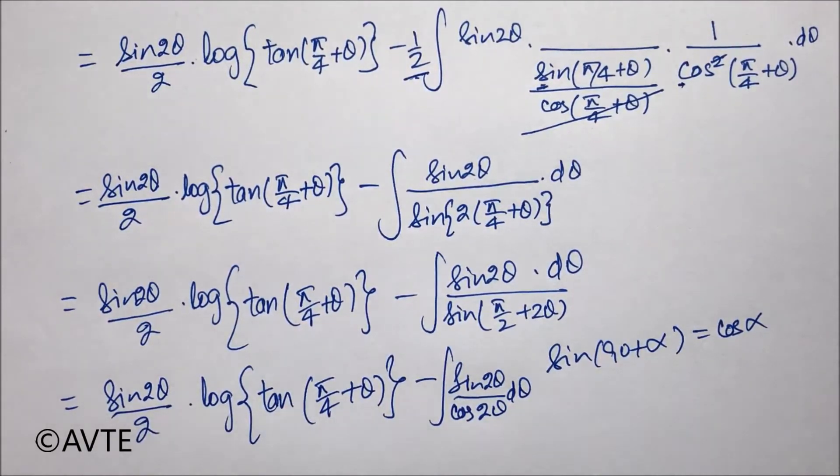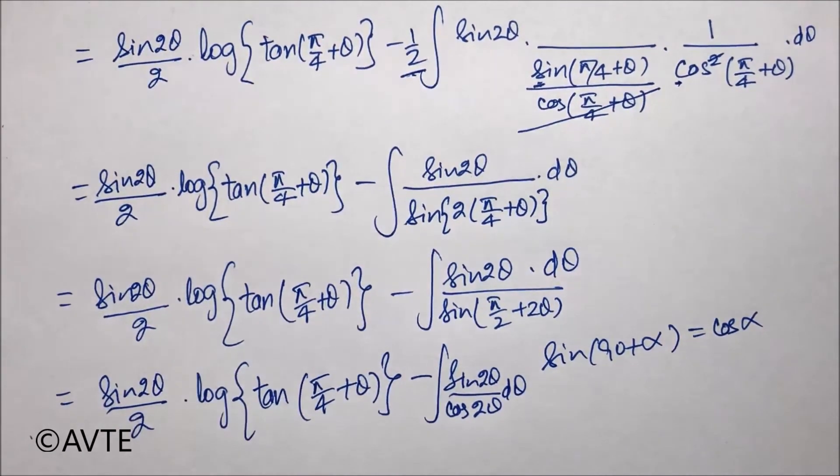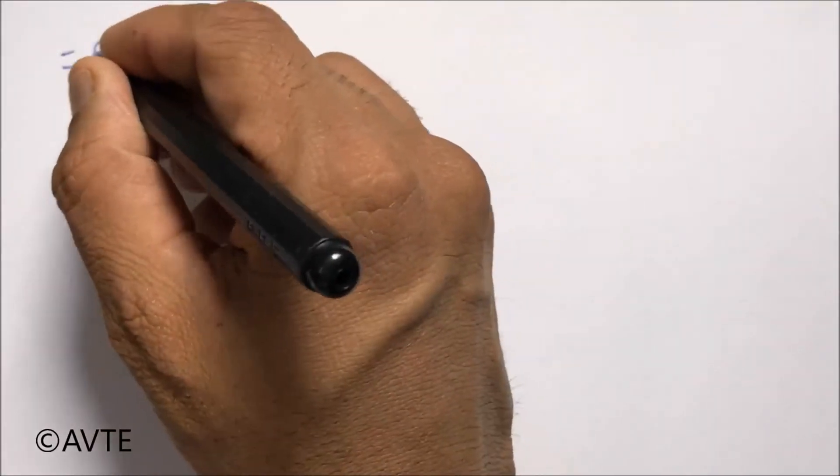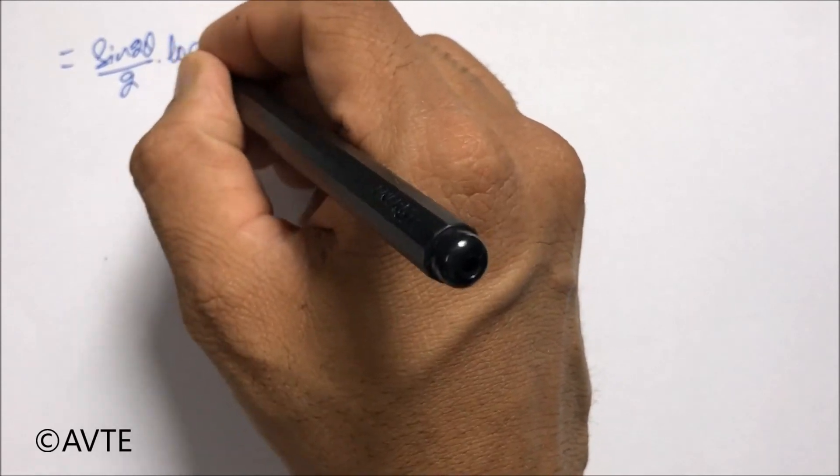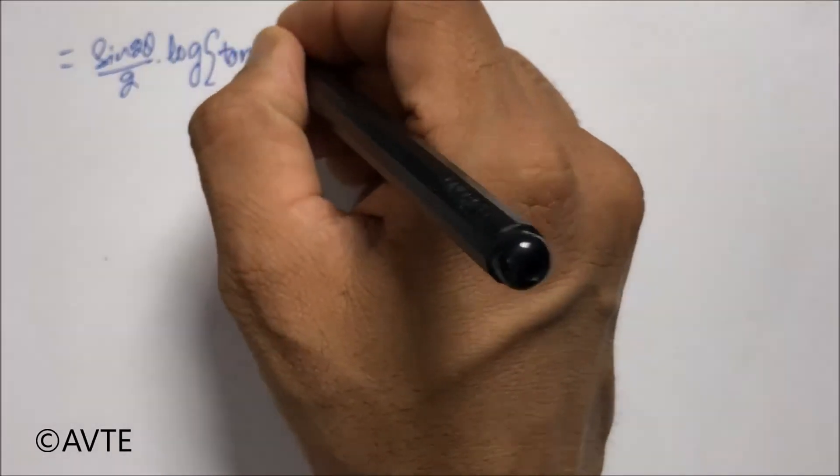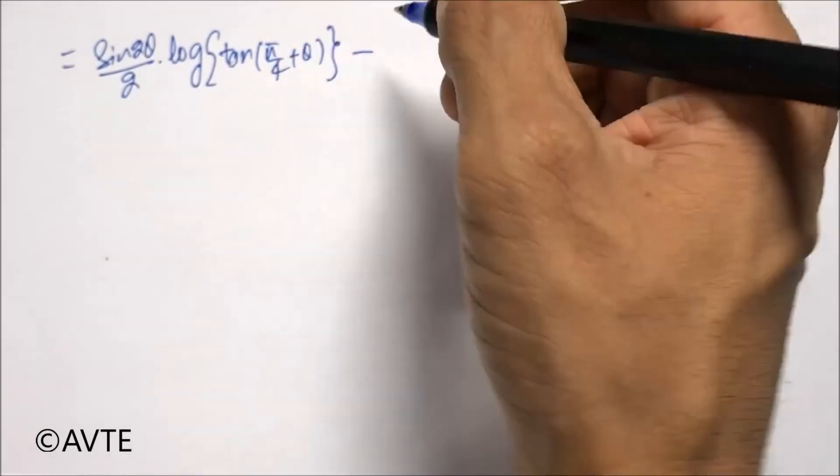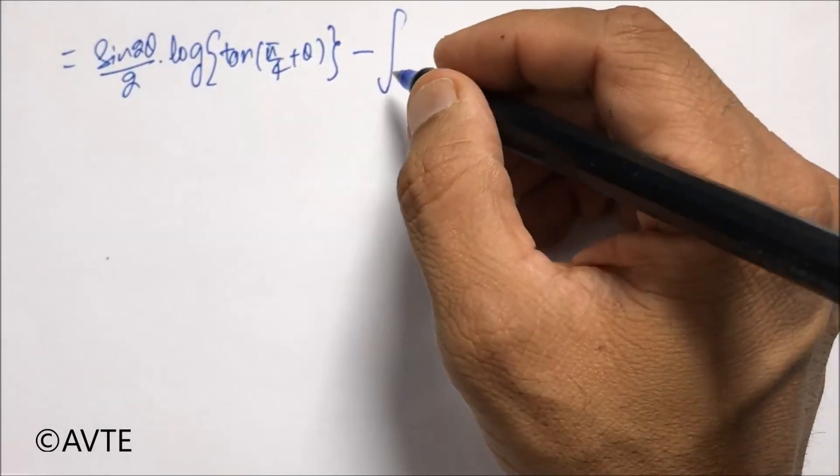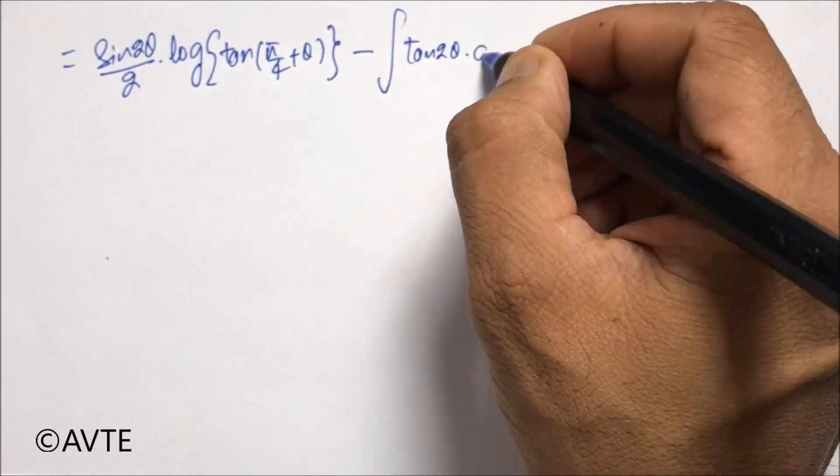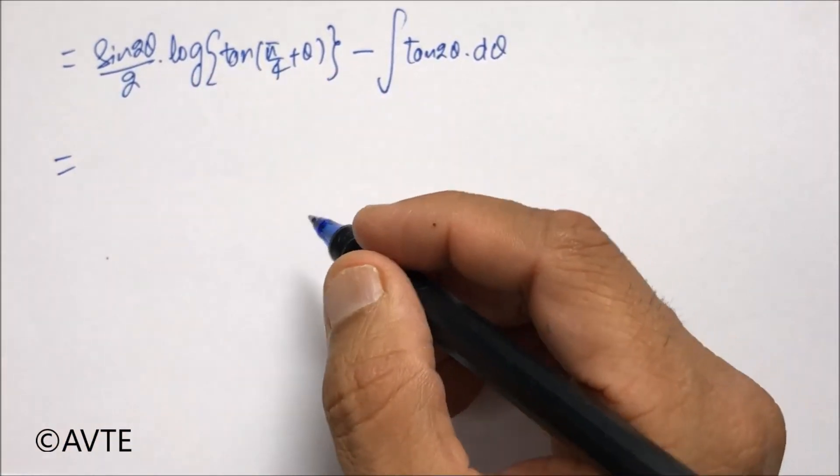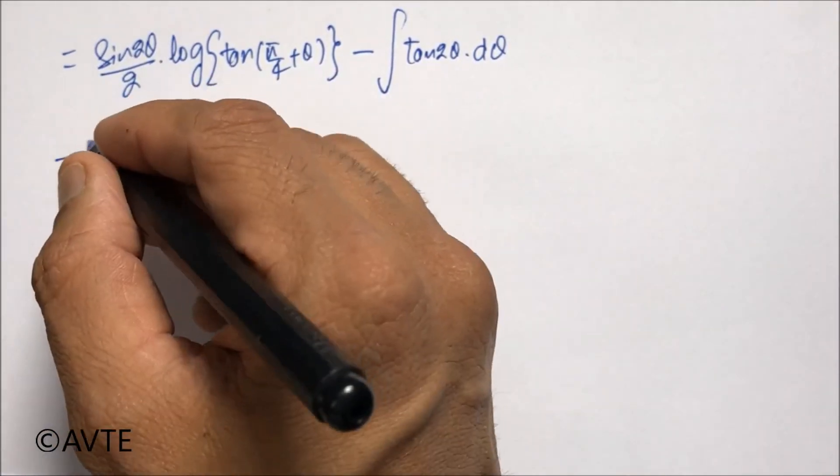And now you can integrate tan 2θ as log mod secant 2θ upon 2. So the final answer is: you write sin 2θ over cos 2θ as tan 2θ, and the integration of tan 2θ is log mod secant 2θ upon 2.